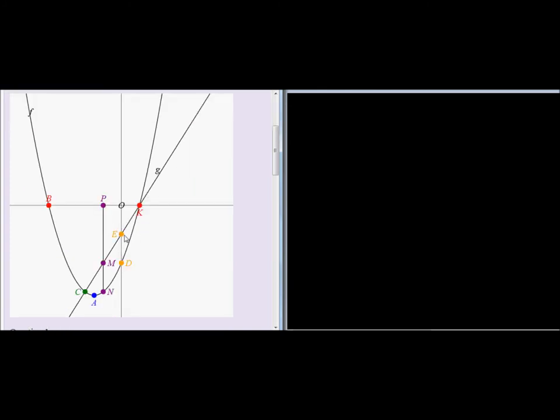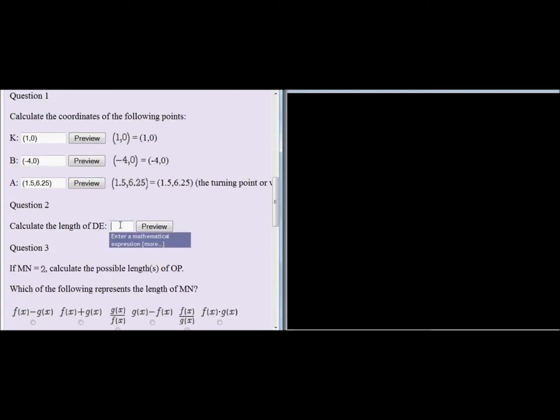So E is negative 2. That means the distance from negative 2 to negative 4 is simply 2 units.